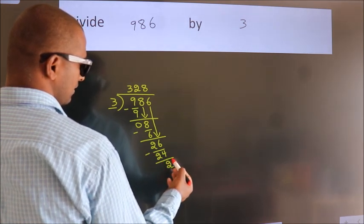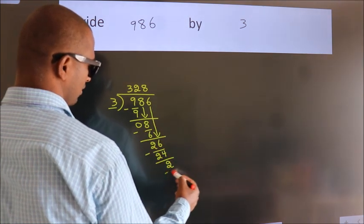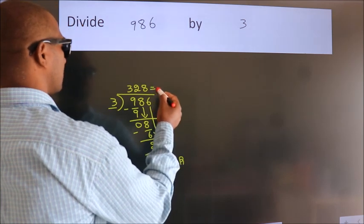After this, no more numbers to bring it down. So we stop here. This is our remainder. This is our quotient.